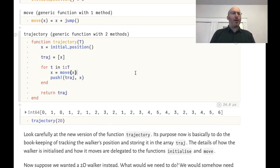But if we look at this function we realize that actually we don't ever say that the walker lives in one dimension. If we were to change, to modify the initial_position function and the move function, we could actually have a walker in two dimensions.